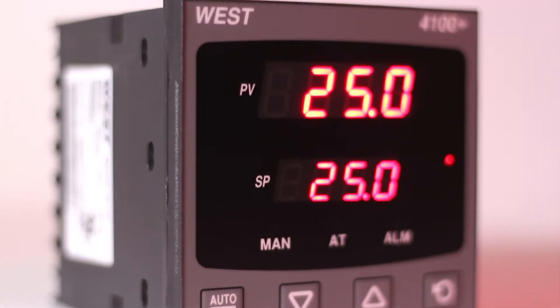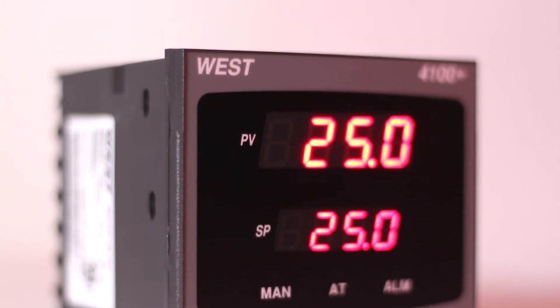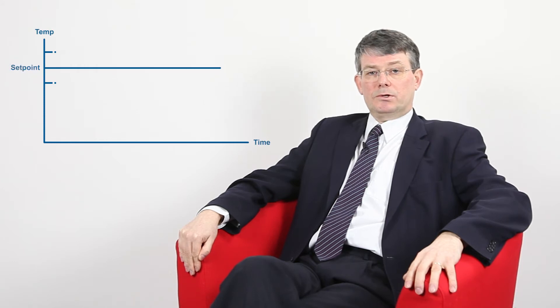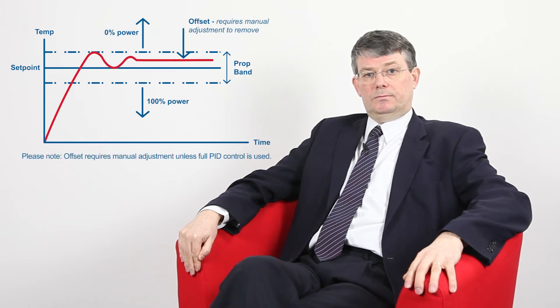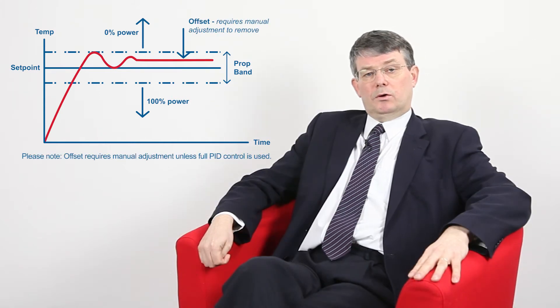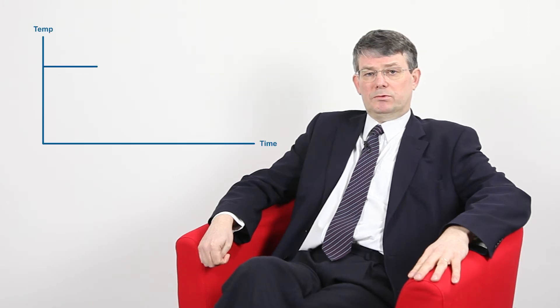Similarly, if the process was too high, the output would be reduced as it rose through the proportional band. This sounds like it would work well, but in fact it would only work well if the output power required to maintain the set point was exactly 50%. In reality, this is unlikely to be the case. What would happen is the process would settle some way above or below the set point, giving us an offset. This offset, or control deviation, has to be removed by the user through an adjustment to the proportional band and its position relative to the set point — this is known as resetting the controller.